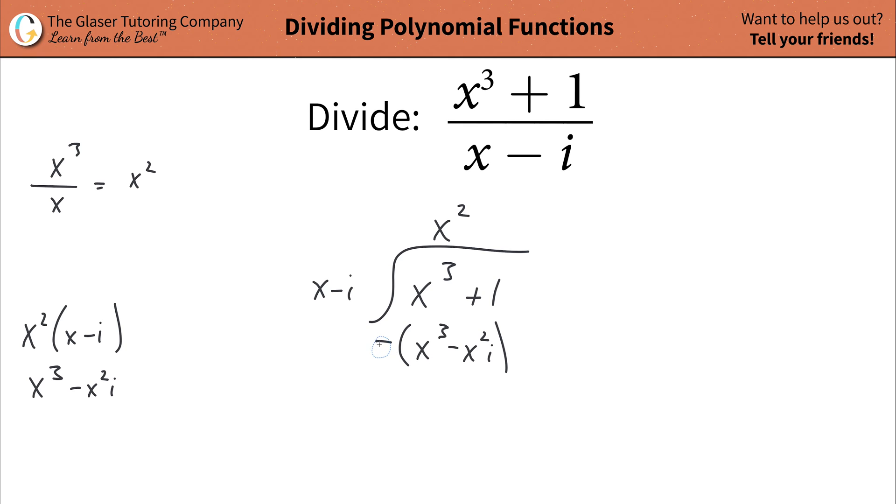Now you're going to take this negative symbol and distribute it to each of those terms inside of your parentheses. So this becomes a positive and that becomes a negative. What should happen is that the leading term here should cancel. And now you're going to see if you can combine those. And we can't combine those because this has an x in it and also an i. So you're going to leave it x squared i plus one.